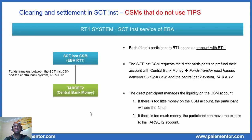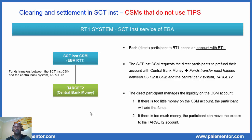When a participant sends an SCT INST, his account is debited. And if a participant receives an instant transfer, that will result in crediting that account with RTL1. So the balance of the participant's CSM account moves throughout the processing of the transactions. Logically, the direct participants must manage the liquidity on the CSM account. If there is too little money on the CSM account, the participant will add funds. But if there is too much money, the participant can move the excess to his Target2 account and use it for other purposes.